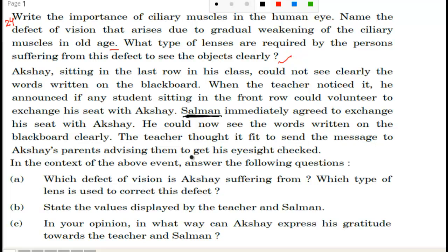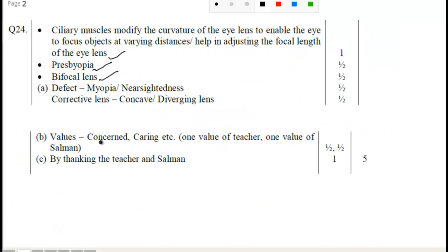The teacher thought it fit to send a message to Akash's parents advising them to get his eyesight checked — so the teacher is very caring about Akash. In the context of the above event, answer the following questions: which defect of vision is Akash suffering from, and which type of lens is used to correct this defect?